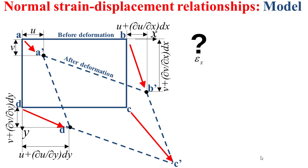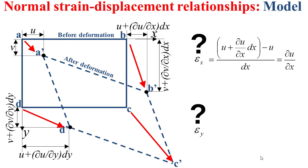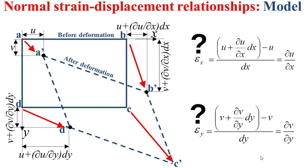Let's examine the normal strain along x, denoted by ε_x. This normal strain along x should be equal to the quantity circled in red minus the quantity circled in blue, divided by dx. Finally, we can say that the normal strain along x is the variation of the x component of the displacement along the x direction. Similarly, we can determine the normal strain along y, denoted by ε_y, as the difference between the quantity circled in red minus the quantity circled in blue divided by dy. We obtain, finally, a normal strain along y equal to the variation of the y component of the displacement along the y direction.